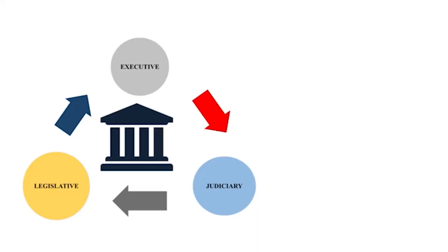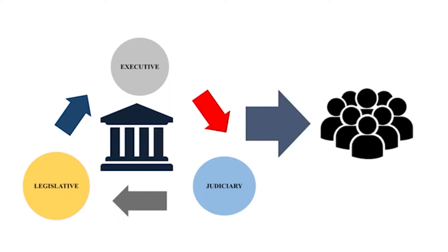The government is composed of three branches: the executive branch, the judiciary, and the legislative branch. These branches work together to protect and preserve the rights of the Filipino people. To do so, the government is imbued with three powers.